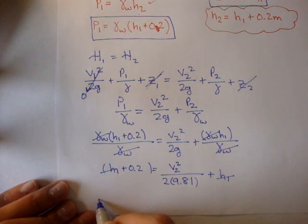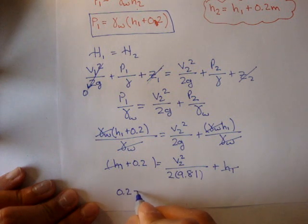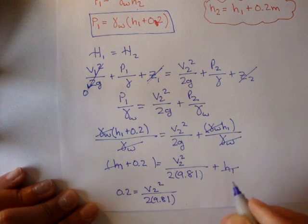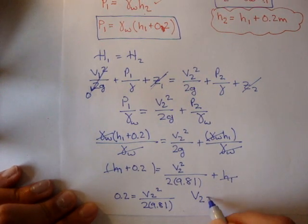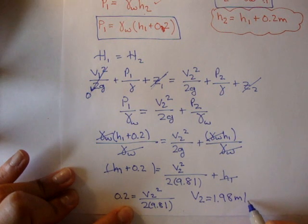So we're left with 0.2 is equal to v2 squared over 2 times 9.81. And if we solve for v2, we get about 1.98 meters per second.